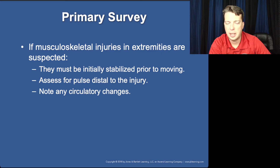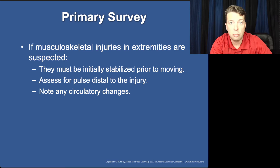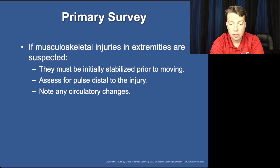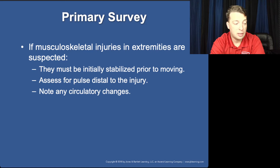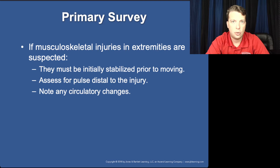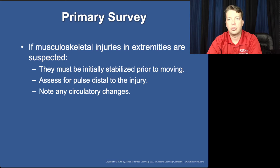Obviously this is only after all life threats have been cared for. What is required to note circulatory changes? You have to have a baseline. So prior to splinting, immobilizing, or doing any form of care to a patient with musculoskeletal injuries, you need to monitor for pulse, sensory, and motor function. When dealing with a distal extremity injury — like a fibula fracture or radial-ulnar fracture — be cautious when asking for pulse, motor, and sensory function. Asking them to wiggle their fingers could result in a significant increase of pain.